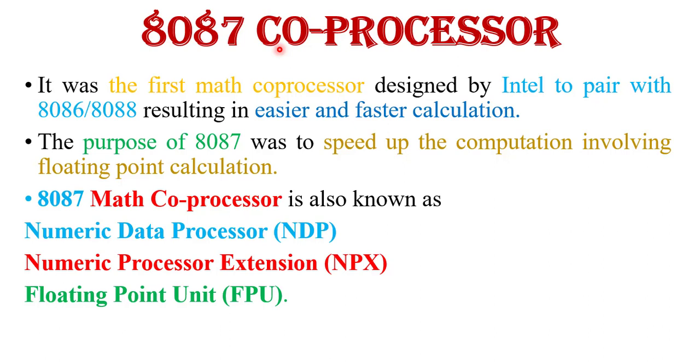Now 8087 coprocessor, what is 8087 coprocessor? 8087 is the first math coprocessor designed by Intel to pair with 8086 or 8088 microprocessor resulting in easier and fast calculation.